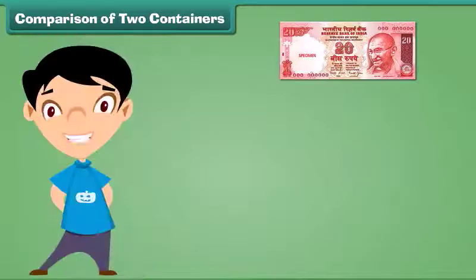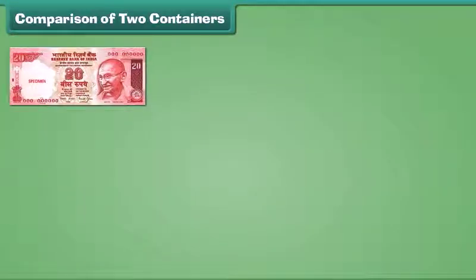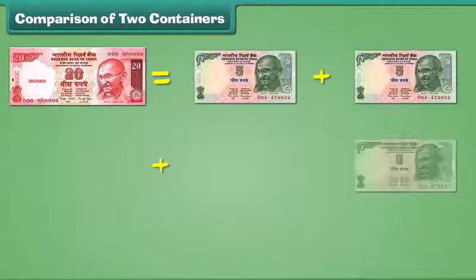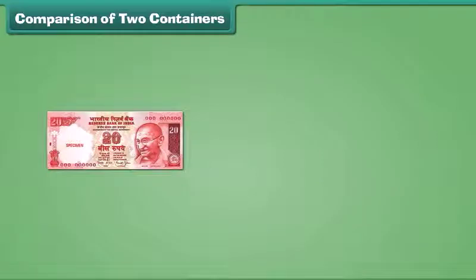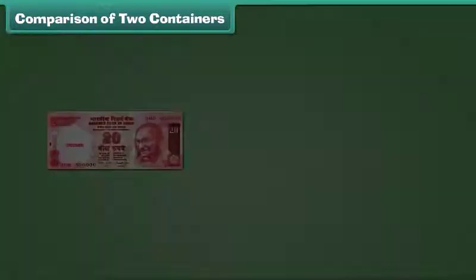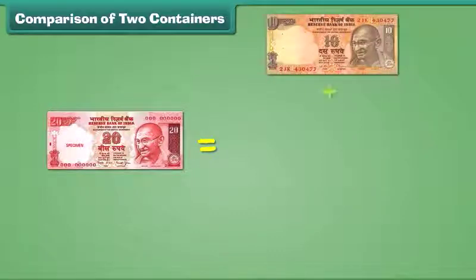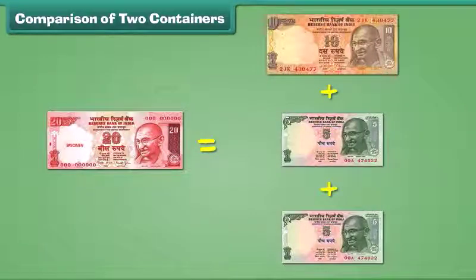This is a 20 rupee note. A 20 rupees note is equal to the sum of 4 five-rupee notes. A 20 rupees note is equal to the sum of 2 ten-rupee notes. A 20 rupees note is also equal to the sum of 1 ten-rupee note and 2 five-rupee notes.